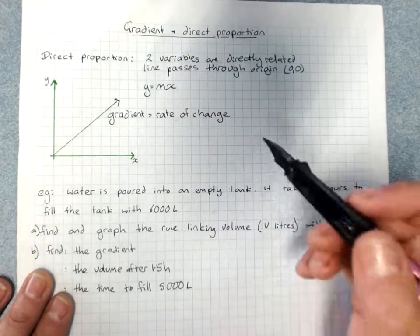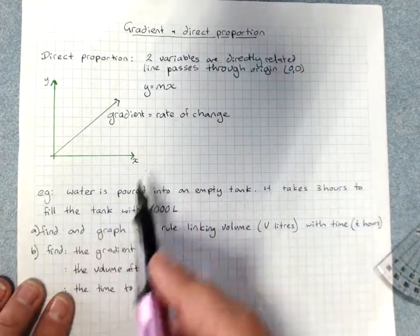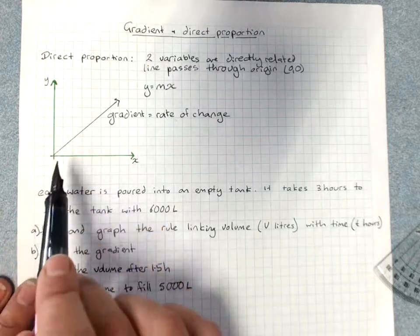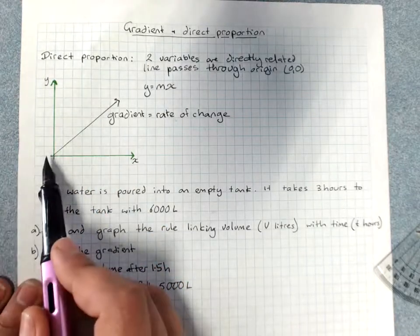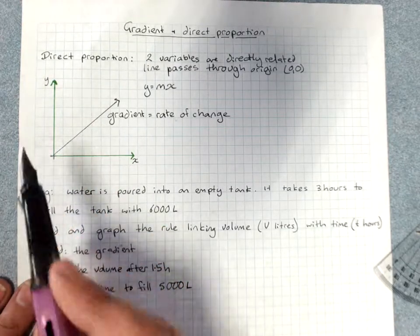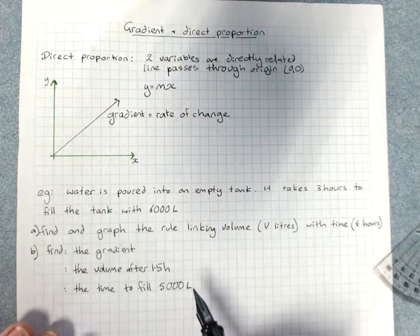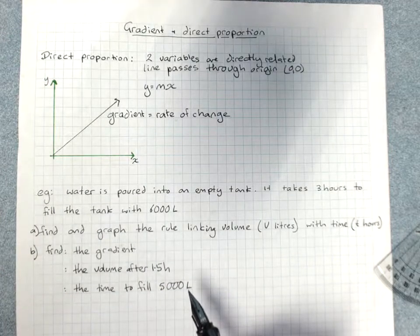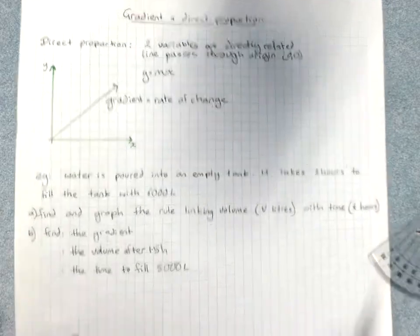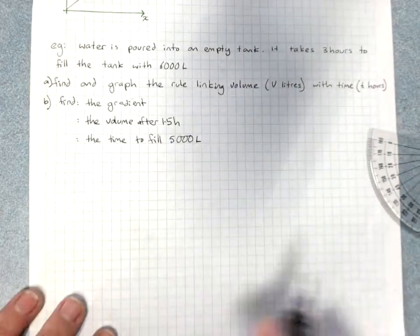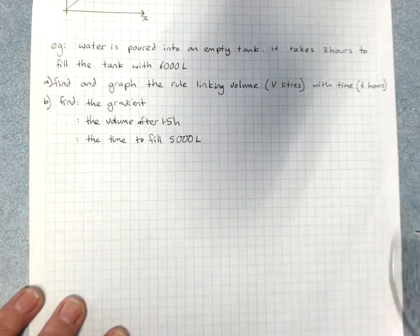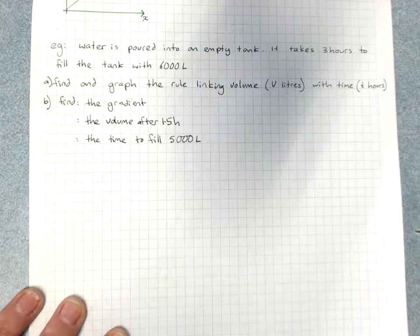We often get things like distance and time. Distance in kilometers travelled over time. If you've travelled for 0 time, you've gone 0 distance. That's a direct proportion relationship. So, type of question we might get. Water is poured into an empty tank. It takes three hours to fill the tank with 6,000 liters.